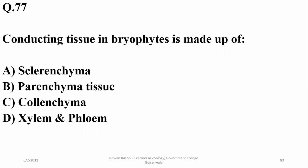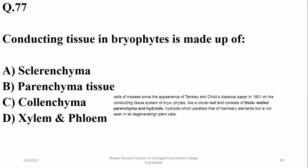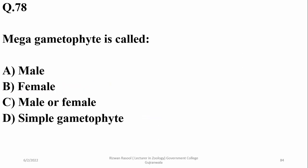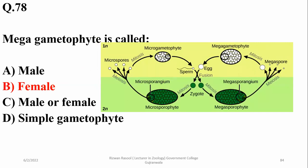Number 77. Conducting tissue in bryophytes is made up of parenchymatous tissue, while in other plants it may have types of xylem-like tissues actually derived from sclerenchyma. So beta. Number 78. Megagametophyte is called the female gametophyte, so beta is the right option. While microgametophyte forms the male gametophyte.